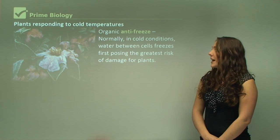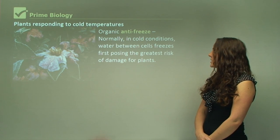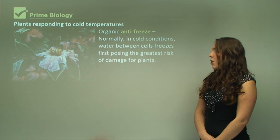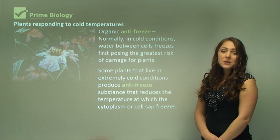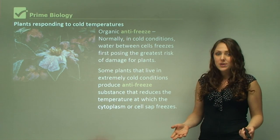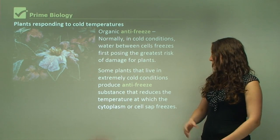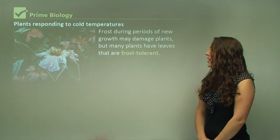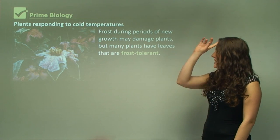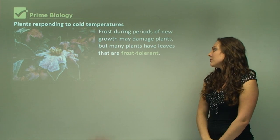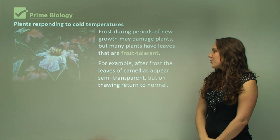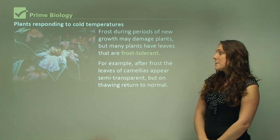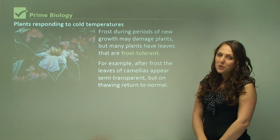Some plants have organic antifreeze. Normally in cold conditions, water between cells freezes first, posing the greatest risk of damage for plants. Some plants that live in extremely cold environments produce an antifreeze substance which reduces the temperature at which the cytoplasm or cell sap freezes. Frost during periods of new growth may damage plants, but many plants have leaves that are frost tolerant. For example, after frost the leaves of camellias appear semi-transparent, but on thawing they return back to normal.